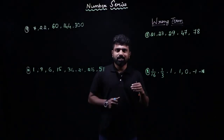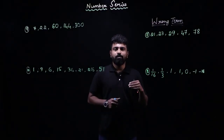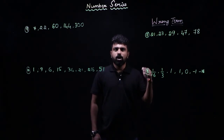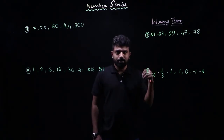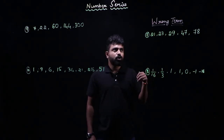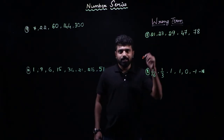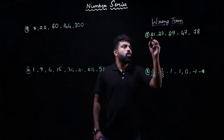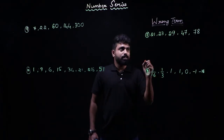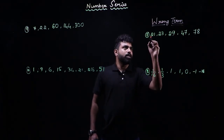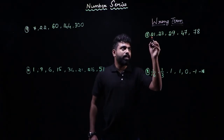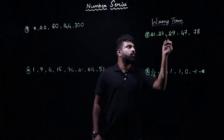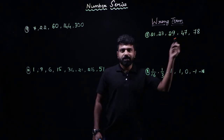In today's session, we have been dealing with missing terms. Now let us look at wrong terms. The first example on wrong terms has the series: 21, 23, 29, 47, and 78.